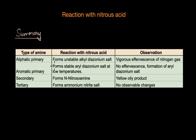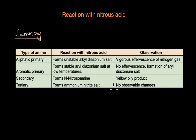To summarize: primary aliphatic amines react with nitrous acid to form an unstable alkyldiazonium salt with vigorous effervescence of nitrogen gas. Primary aromatic amines form a stable aryldiazonium salt at low temperature with no effervescence. Secondary amines give a yellow oily N-nitroso amine product. Tertiary amines show no reaction — only an ammonium salt is formed. In the next video, we'll look at another distinguishing test: the Hinsberg test.